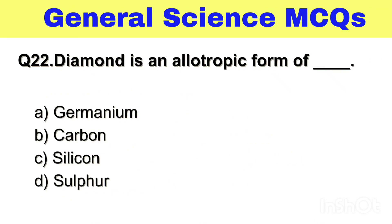Question No. 22. Diamond is an allotropic form of — Option A. Germanium, B. Carbon, C. Silicon, D. Sulphur. The right answer, Option B. Carbon.